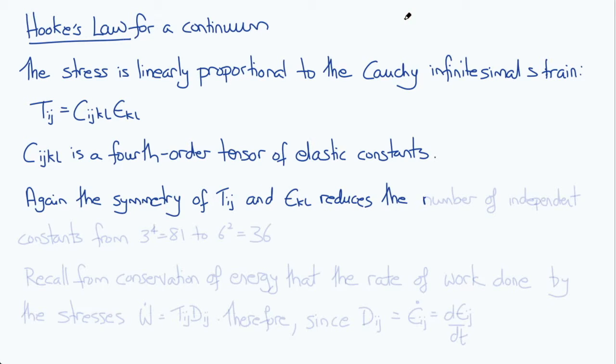However, because of the symmetry of the stress Tij and the strain εkl, the number of independent constants would reduce from 81 to 36, which I think of as the number of constants in a 6x6 matrix relating the 6 independent components of the stress tensor to the 6 independent components of the strain tensor.